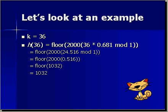If there was a decimal point, the floor function rounds down. So we would store the value for a key of 36 in the slot in our hash table of 1032.